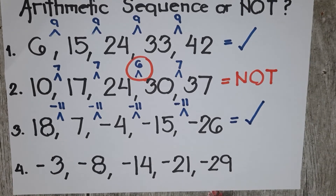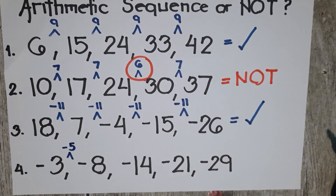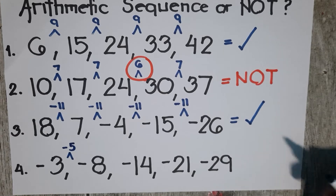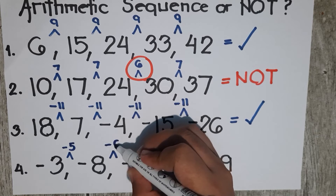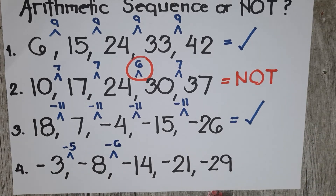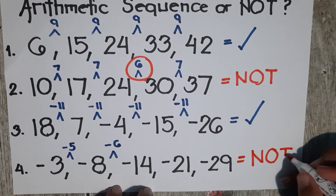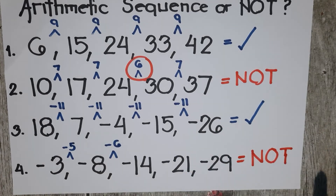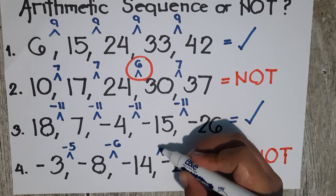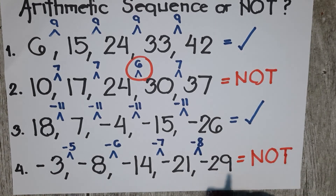And finally, number 4. From negative 3 to negative 8, the common difference is negative 5. From negative 8 to negative 14, the common difference is negative 6. From here you can already see that these two common differences are different, so automatically the answer is not an arithmetic sequence — no need to continue. But if you want to verify: from negative 14 to negative 21 the difference is negative 7, and from negative 21 to negative 29 it is negative 8. So obviously, still not an arithmetic sequence.